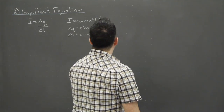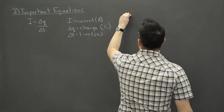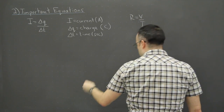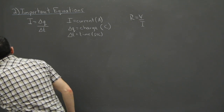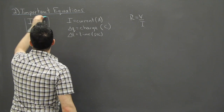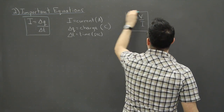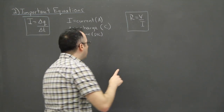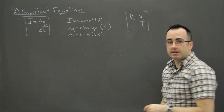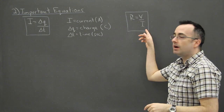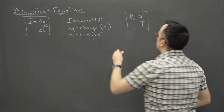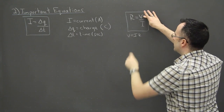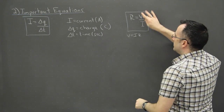Another equation on your data booklet is R equals V over I. This is an important one — I'll put little squares around the data booklet equations. This one is often called Ohm's Law. Some people prefer to rewrite it with V first: V equals IR. It's the same thing — just get V on its own by moving I over.